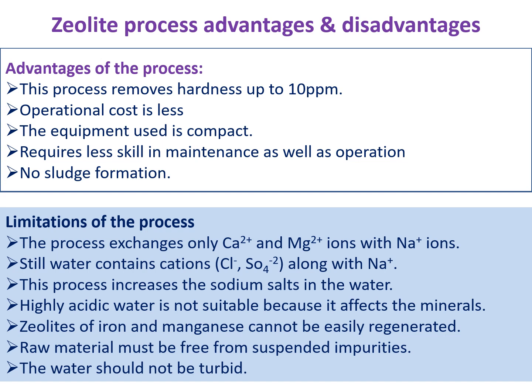Regarding advantages and disadvantages of the zeolite process: this process can produce water with hardness as low as 10 ppm, which is suitable for industrial use. Drinking water may have 100–300 ppm hardness, so the zeolite process is not required for drinking purposes, but industries that require very low hardness can use it. The operation cost is very low, the equipment is a compact unit occupying very little space, no special skill is required to maintain or operate it, and no sludge is formed.